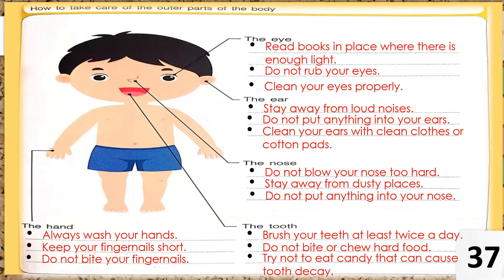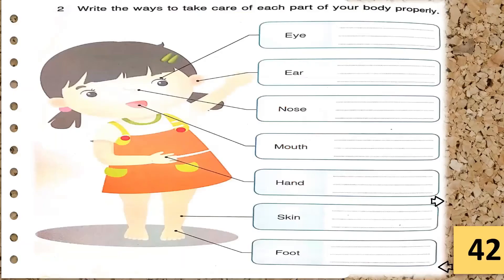You can pause this to finish writing. When you're done, let's move on to page 42. The direction says: write two ways to take care of each part of your body. We have: eye, ear, nose, mouth, hand, skin, and foot.